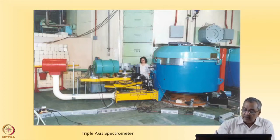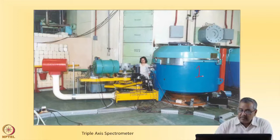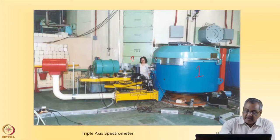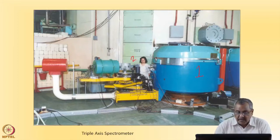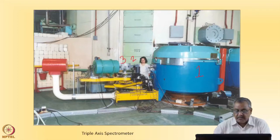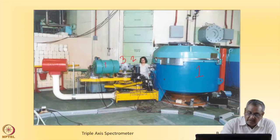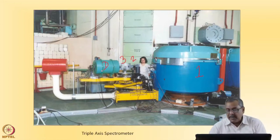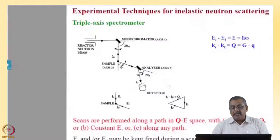As I told you, this is the monochromator drum, this is the first axis, the sample is the second axis, and then the analyzer around the sample which finds out the final energy is the third axis, and then there is a detector. I will go a little bit more into the details of it.